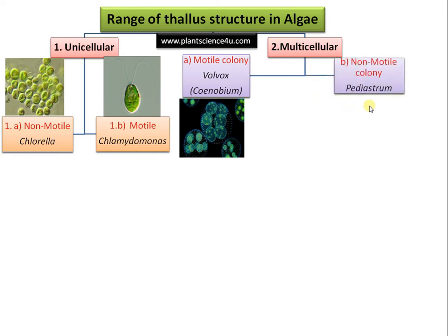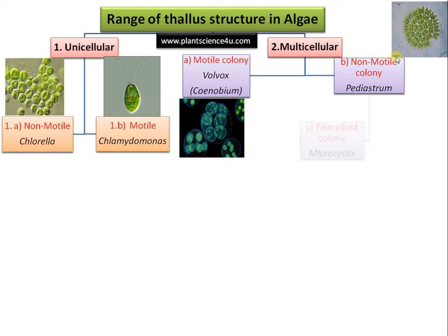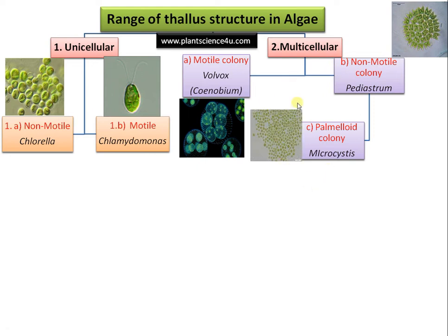The next organization is a non-motile colony, as in Pediastrum — you can see a beautiful alga with regular shape and regular organization of individual cells. Then there is an amorphous or palmyloid colony, where non-motile cells are grouped together in a common mucilage without a definite shape, as in the case of Microcystis.